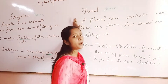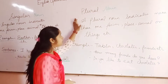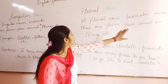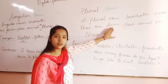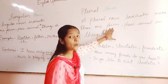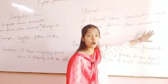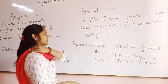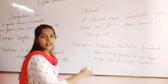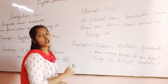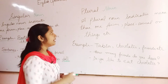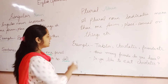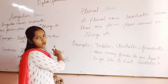Now we come to plural noun. What is plural noun? Plural noun indicates more than one person, animal, or thing. In singular noun, we have not more than one person, but in plural noun we have more than one person. It means plural noun is totally opposite to singular noun.